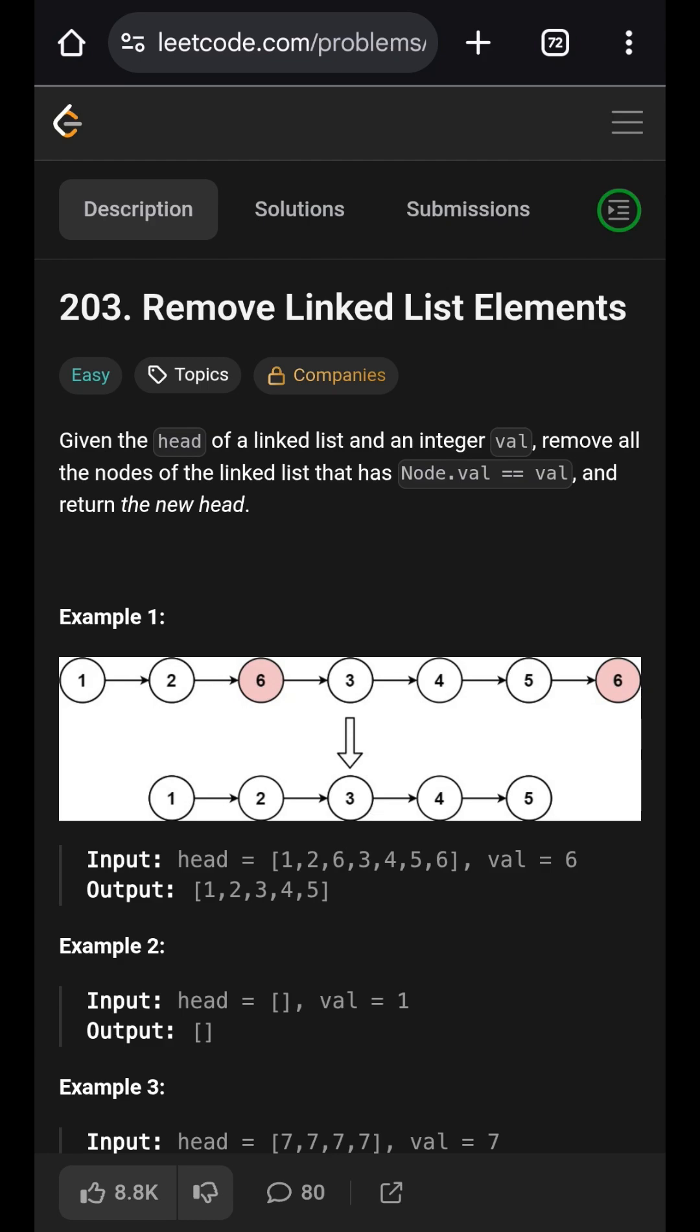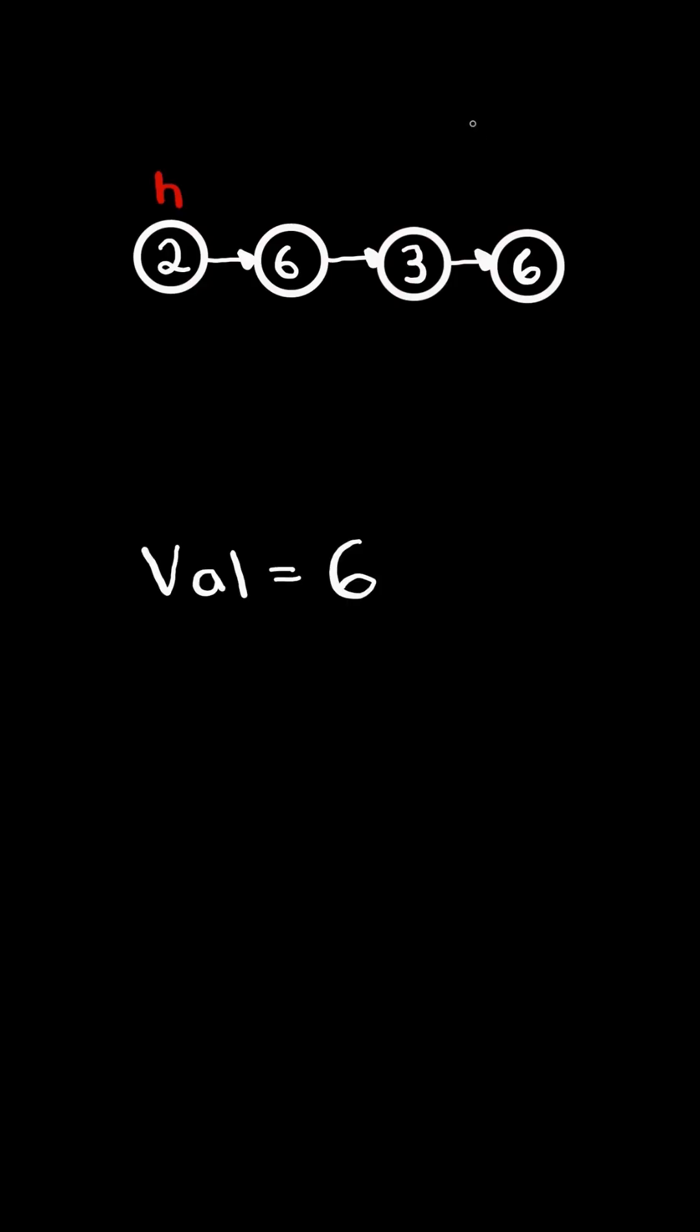Remove link list elements. Given a head of a linked list and an integer value, remove all the nodes in the linked list that have the same value, and return the new head of the linked list. We will solve this in O of n time.